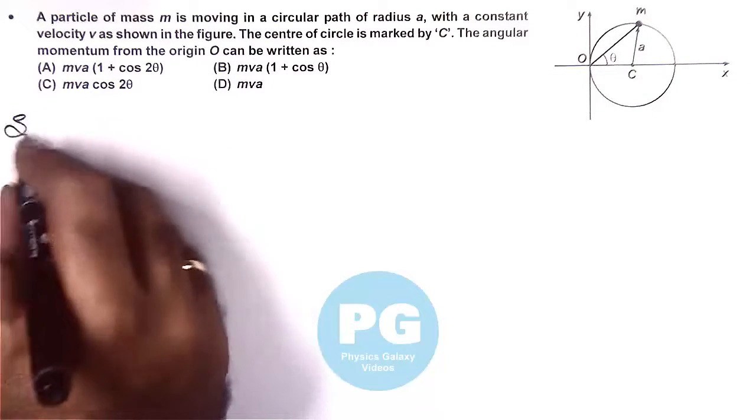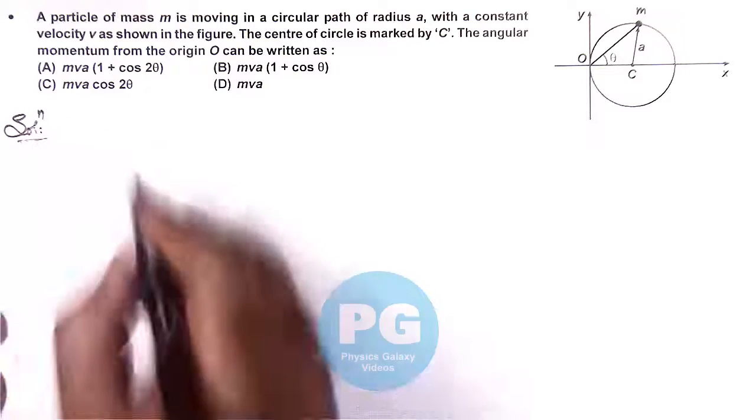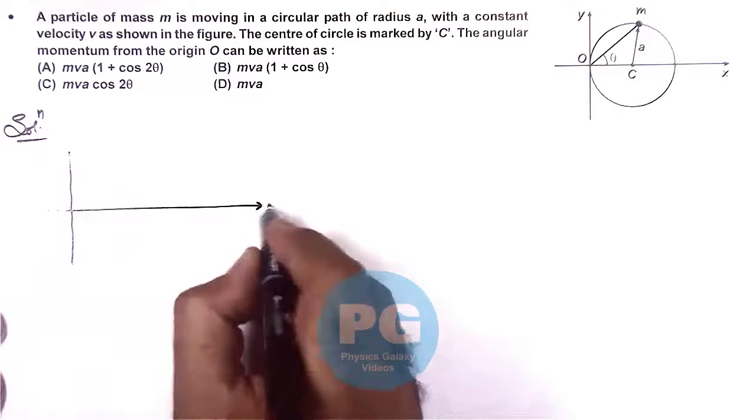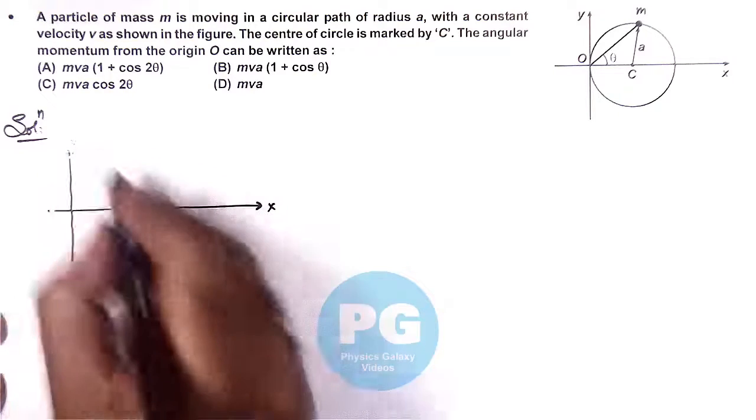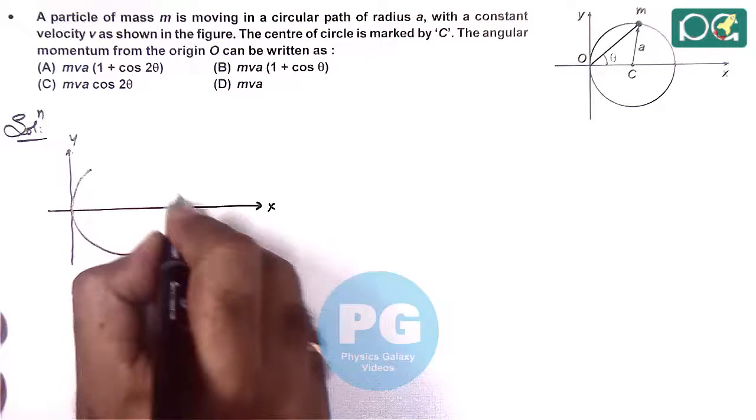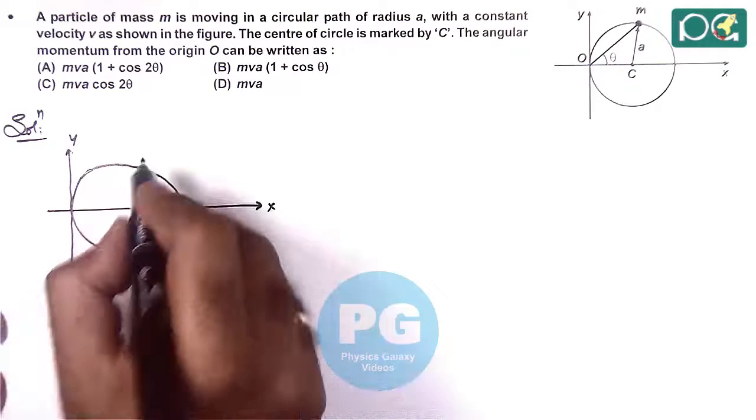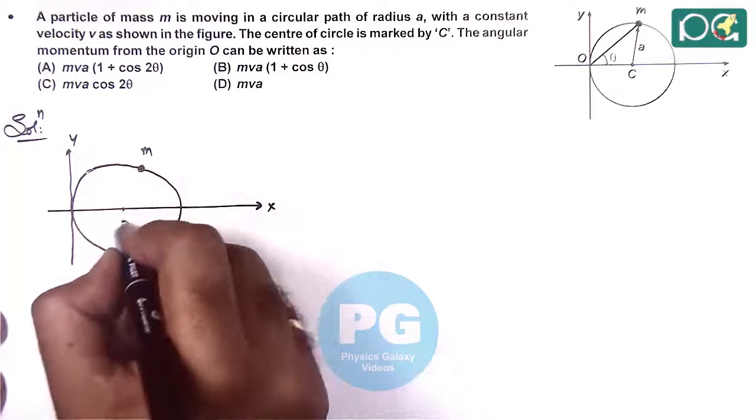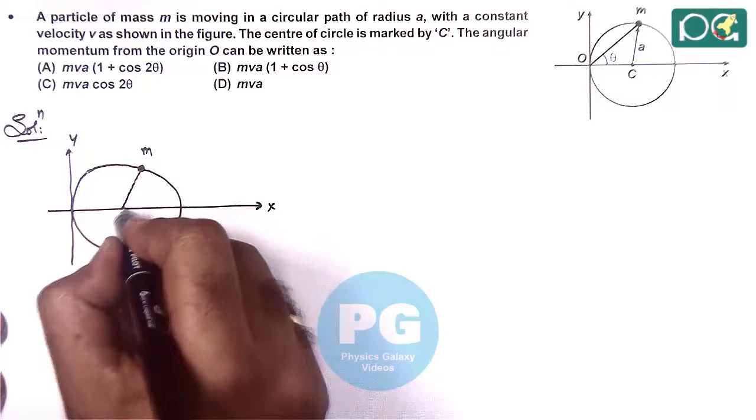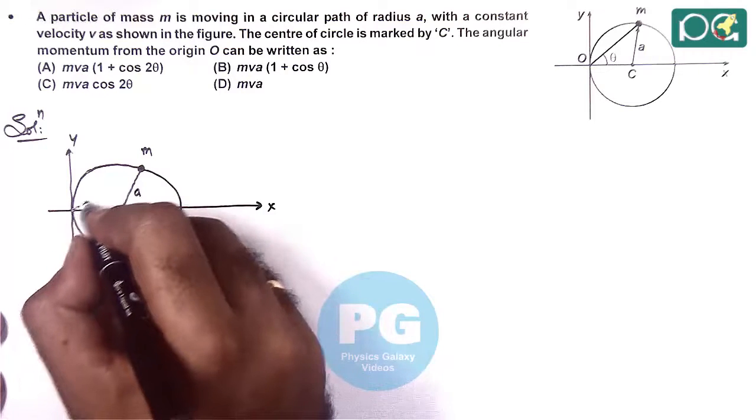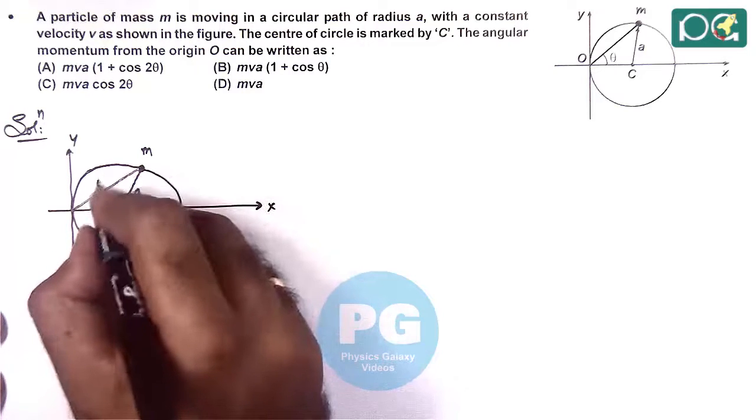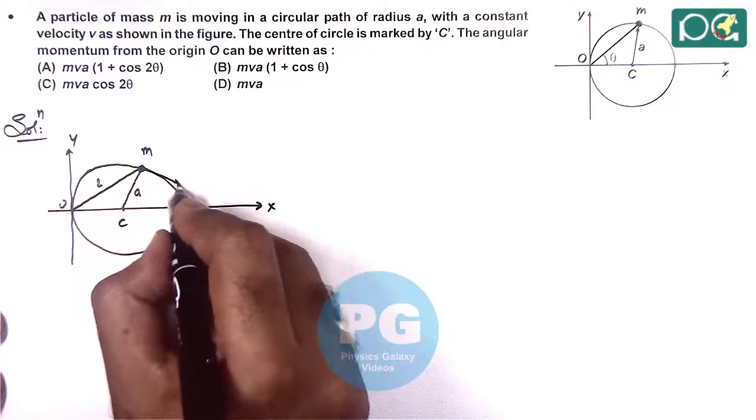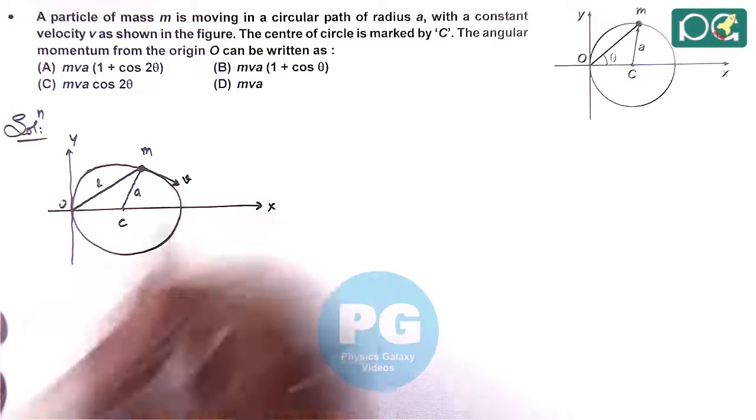So here we can redraw the situation. Here we are given that along x and y this is the circle along which the particle is moving. Here if this is the mass M, with respect to center it is moving in a circle of radius A, and the line joining from origin is of length L. Here the velocity is V which is tangential in direction.